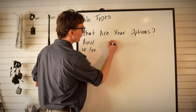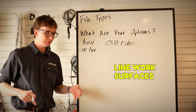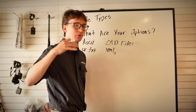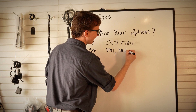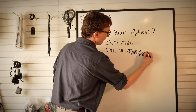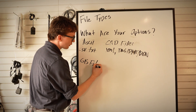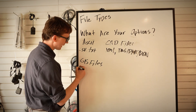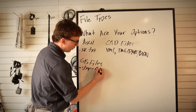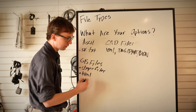Your next file type is CAD files. That's going to be anything where you have line work, surfaces, building plans — file types like XML, DWG, DXF, and DGN. Your third option is GIS style files. These have more basic information but are better for general mapping applications, including shape files — for those of you who work with Esri or field map style software — and KML Google Earth files.